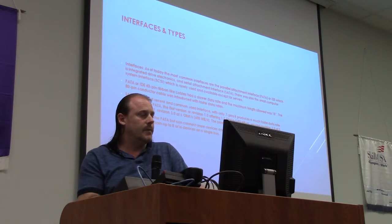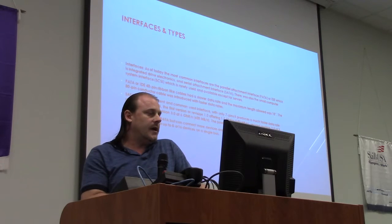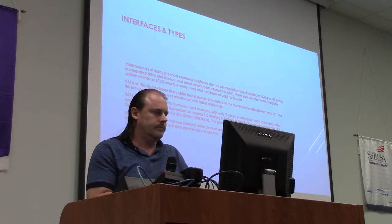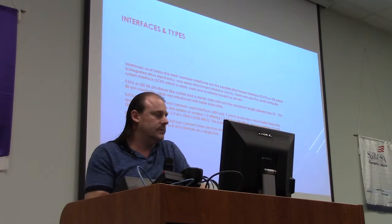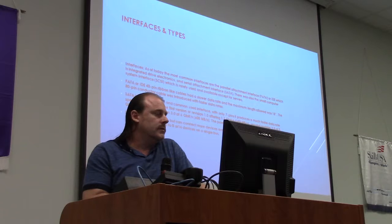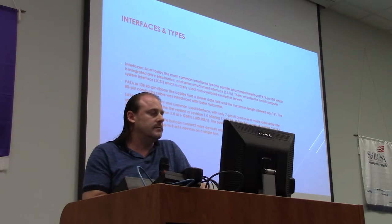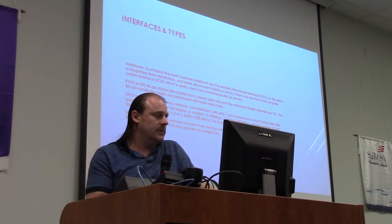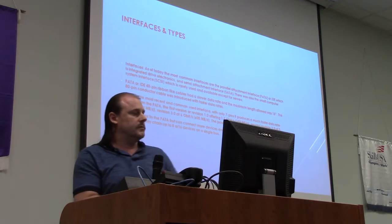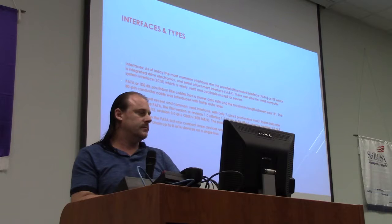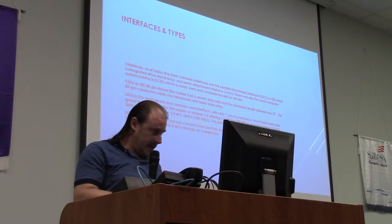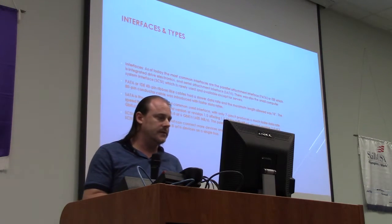The first version of SATA offered 1.5 gigabits per second, about 150 megabytes. The second revision, 2.0, was at 3 gigabits per second, about 300 megabytes. Version 3.0 was at 6 gigabits per second, 600 megabytes. Power SATA has 15 pins. SCSI is similar to the parallel ATA but can connect more devices and has a faster data rate. SCSI contains a chain of 8 or 16 devices on a single bus.